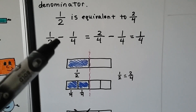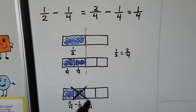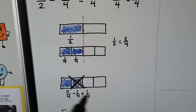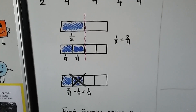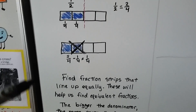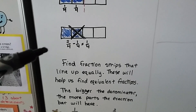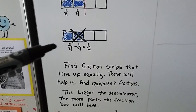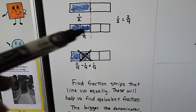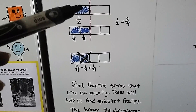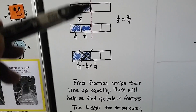If we did one half minus one-fourth, we would take away one of those fourths and we would have one-fourth left over. What we do is we find fraction strips that line up equally and these will help us find equivalent fractions. By lining up the fraction bar that had fourths next to the one that had a half, we could see what they had in common.